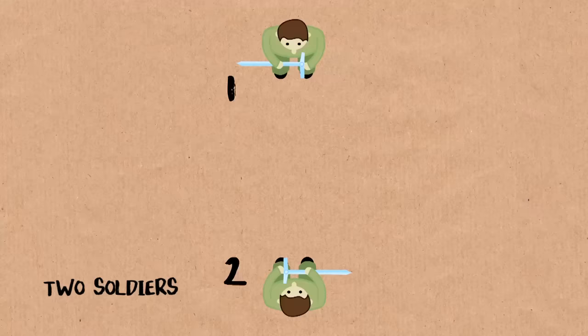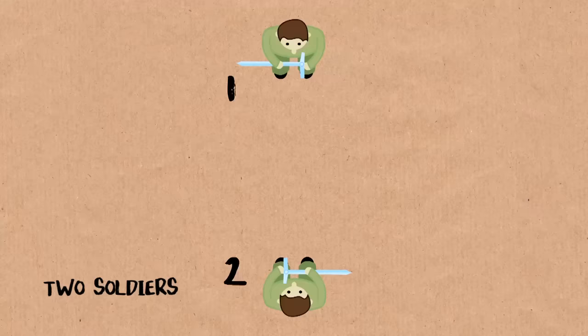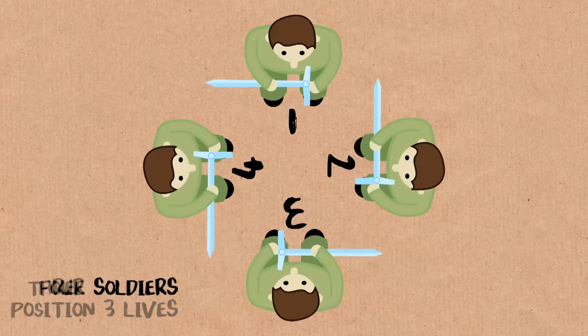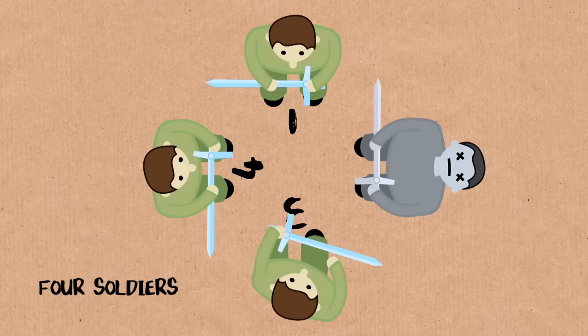So if there's only one person, well, that person's the winner, so that one is easy. There's two people, one kills two, one's the winner. If there's three people, one kills two, three kills one, three's the winner. If there's four people, one kills two, three kills four, one kills three.